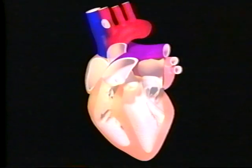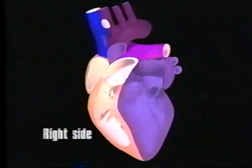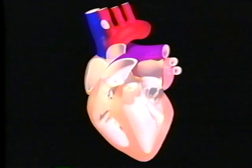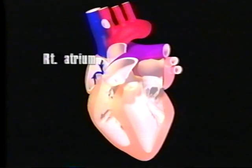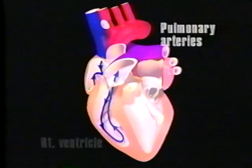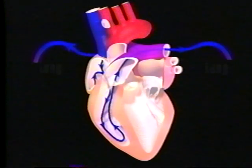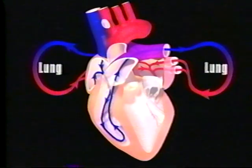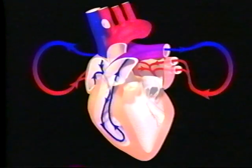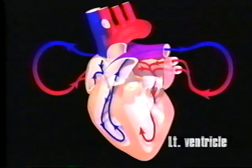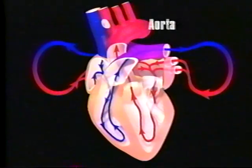The heart can be viewed as two separate pumps housed within one organ. The right side of the heart sends blood to the lungs, and the left side sends blood throughout the body. The right atrium receives oxygen-poor blood returning from the body tissues through the superior and inferior vena cava. The right ventricle pumps this oxygen-poor blood through the pulmonary arteries to the gas exchange surfaces of the lungs to pick up oxygen and eliminate carbon dioxide. The oxygenated blood then returns to the left side of the heart. The systemic circuit begins when the left atrium receives oxygen-rich blood returning from the lungs through the pulmonary veins. The left ventricle pumps this blood into the aorta for distribution to the tissues and organs.